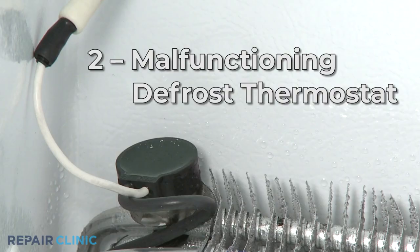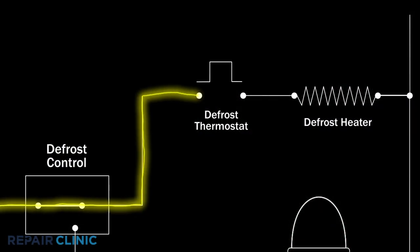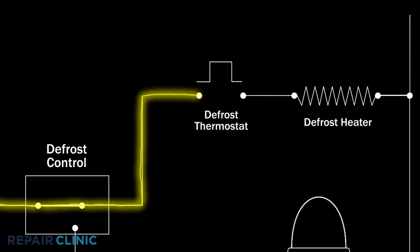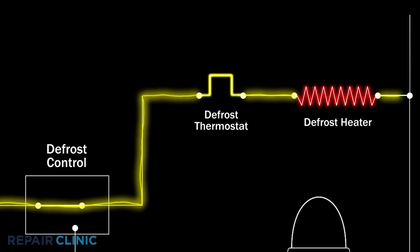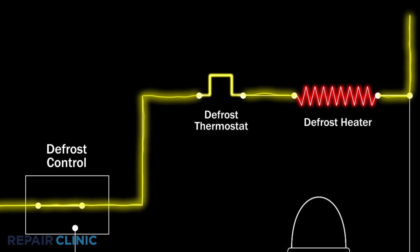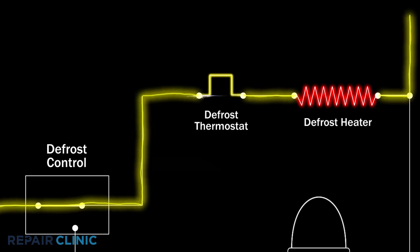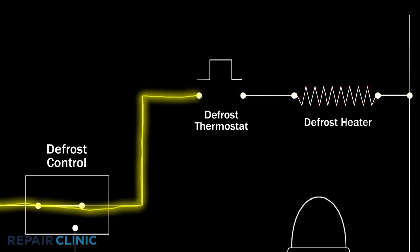The defrost thermostat monitors the temperature of the evaporator coils. When the temperature drops to a set level, the contacts in the thermostat close and allow voltage to power the defrost heater. A malfunctioning thermostat may prevent the heater from working.